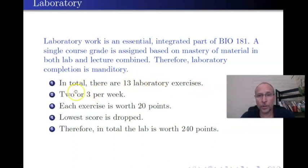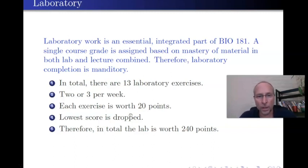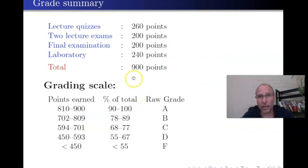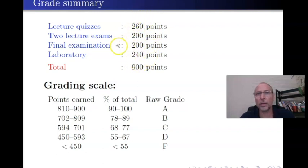There are 13 laboratories total — two in the first week, two in the last week, and three in the remaining weeks. Each lab is worth 20 points and we drop the lowest score, giving a total of 240 lab points. To summarize: lecture quizzes total 260 points (27 minus 1 dropped, times 10), two lecture exams are 100 points each for 200 total, the final exam is 200 points, and the laboratory is 240 points. All of these must be completed to get credit for the course. The deadlines are final — once they pass, these things shut down and you won't have access to them again.